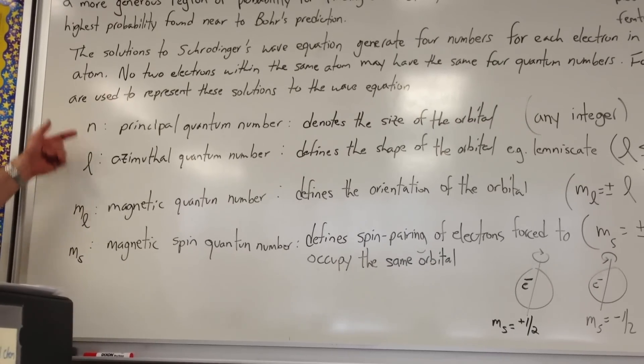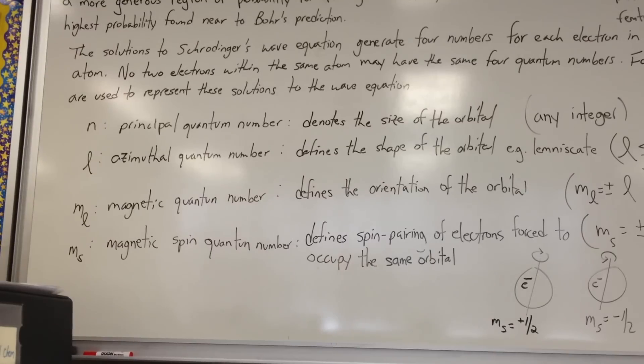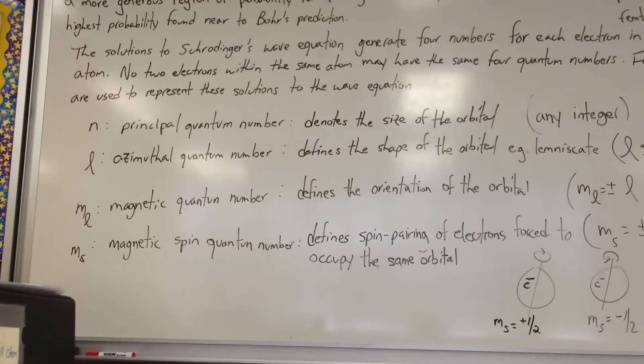The first letter, n, is the principal quantum number, and it denotes the size of the orbital, and it can be any integer: 1, 2, 3, 4, etc.